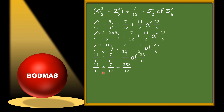Now here is division and addition. According to BODMAS we solve division first. So we write the reciprocal (multiplicative inverse) of 7/12, which is 12/7. So we have 11/6 multiplied by 12/7, plus 253/12 as it is.